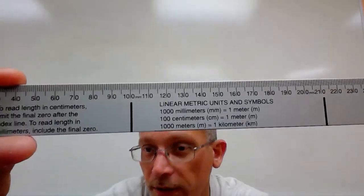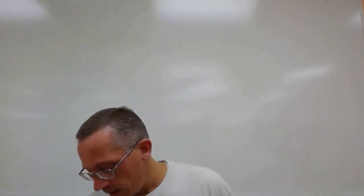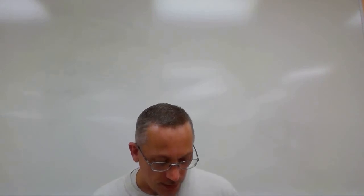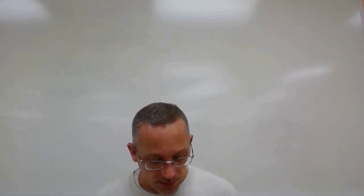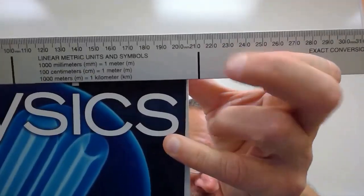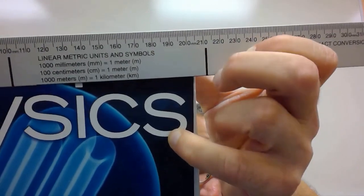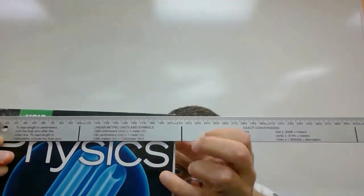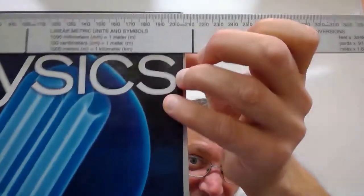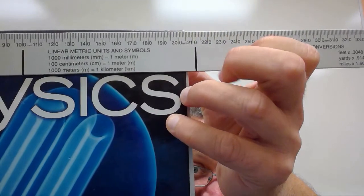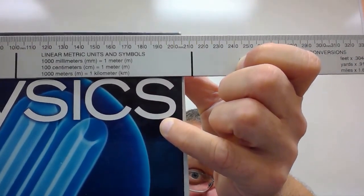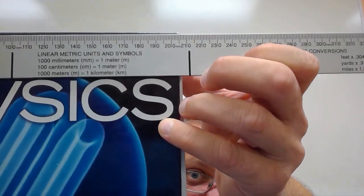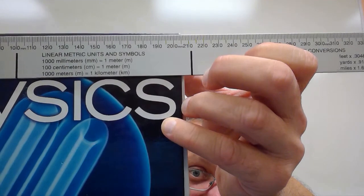This third ruler is marked every millimeter — every tenth of a centimeter. Looking at the book: there's the 20 cm mark and the 21 cm mark. The 20.5 mark is that longer line in the middle. The book doesn't quite reach 20.5 but goes more than 20.4, so maybe it's about 20.45 cm.